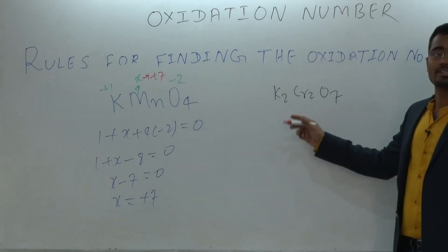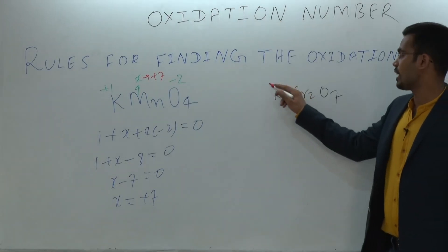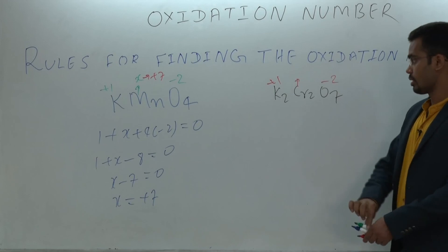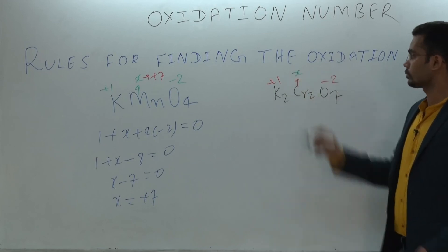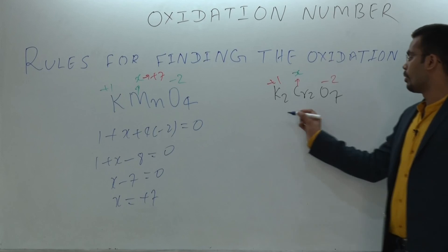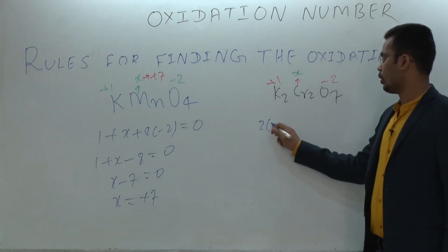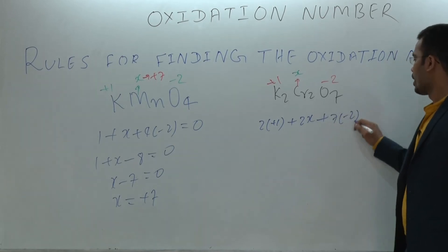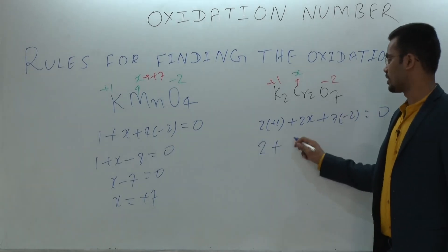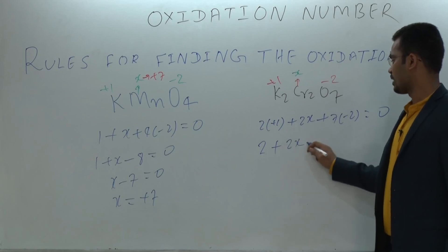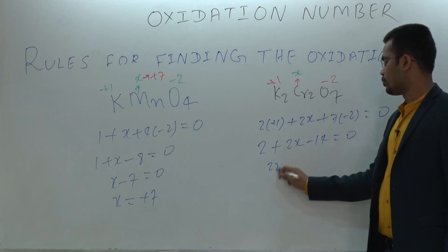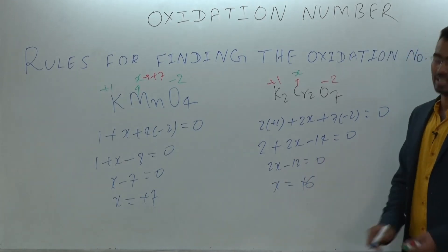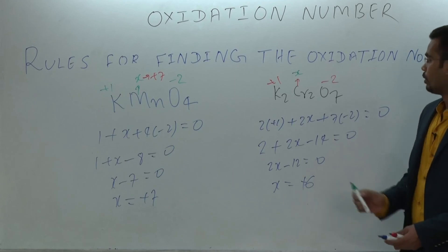For K₂Cr₂O₇, potassium has +1 and oxygen has −2, chromium is x. So: 2×(+1) plus 2×x plus 7×(−2) equals 0. That gives 2 plus 2x minus 14 equals 0, so 2x minus 12 equals 0, meaning x equals plus 6. Therefore the oxidation state of chromium in K₂Cr₂O₇ is +6.